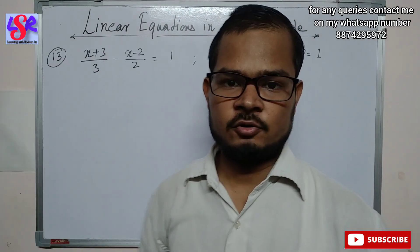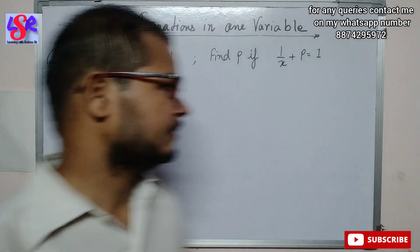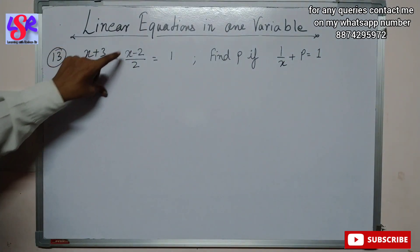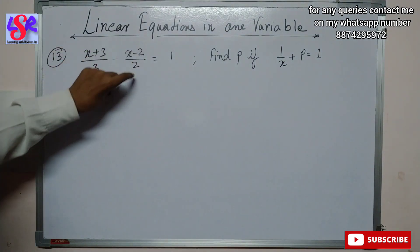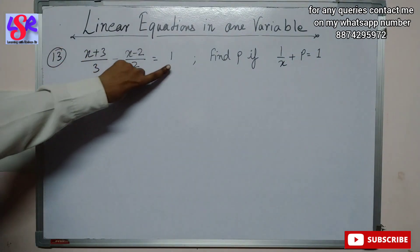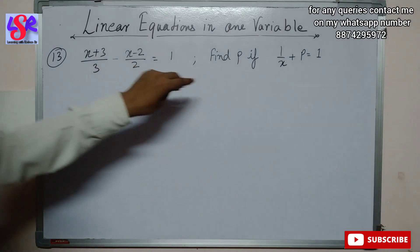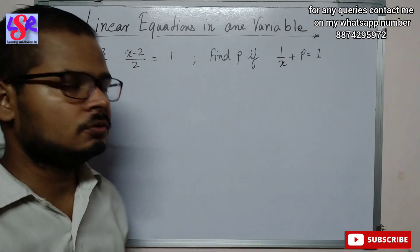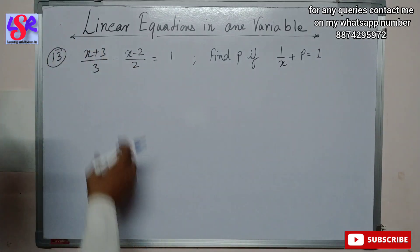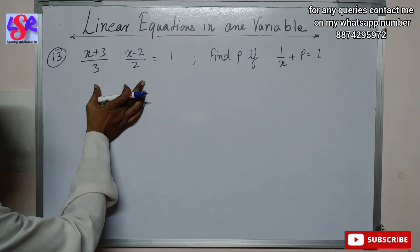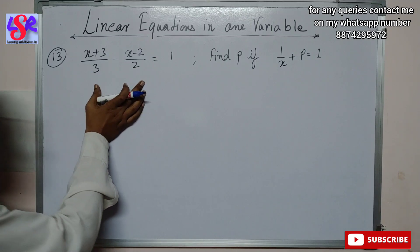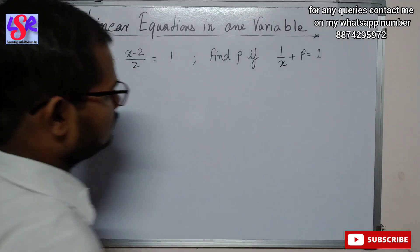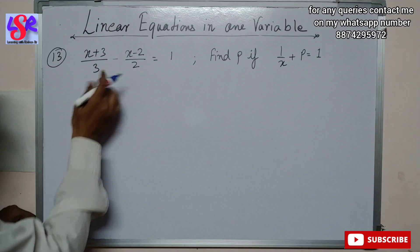Now we have question number 13. Here (x + 3)/3 - (x - 2)/2 = 1, and we have to find p if 1/(x + p) = 1. First we solve for x, then substitute to find p.